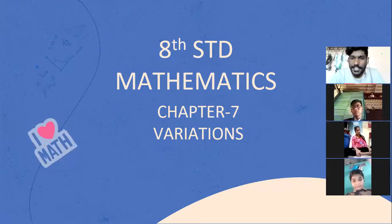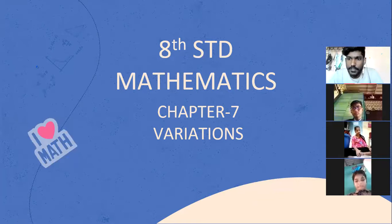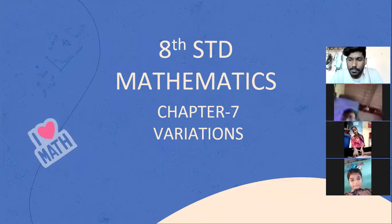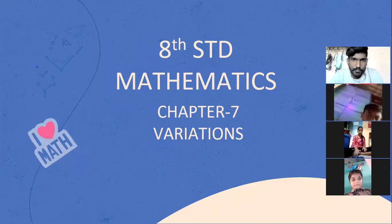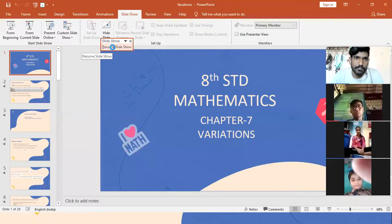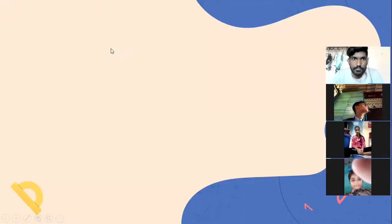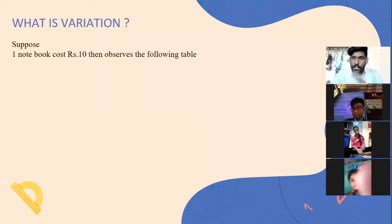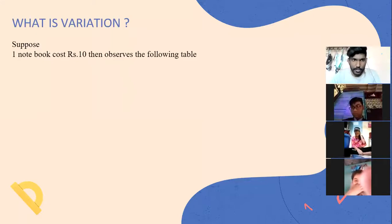Chapter 7 is on Variations. We'll see what variation means, and then we will solve sums on variations. First, let us understand what variation is — we'll understand it with an example, so everyone pay attention carefully.